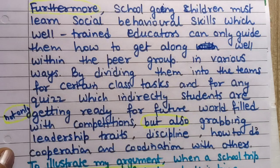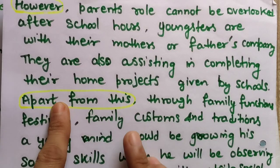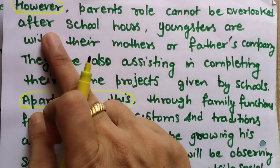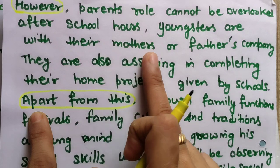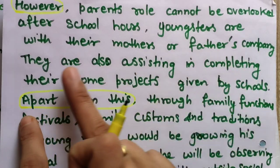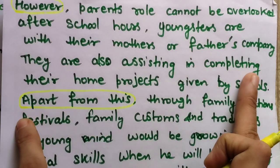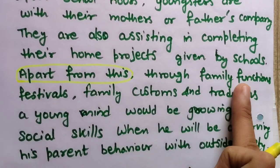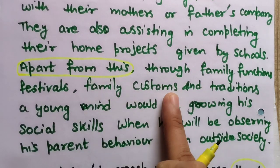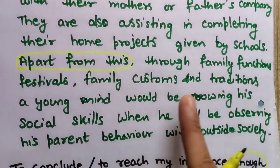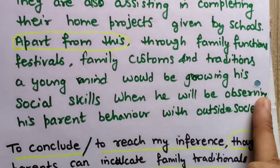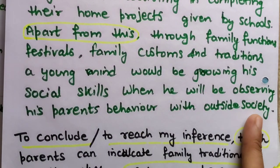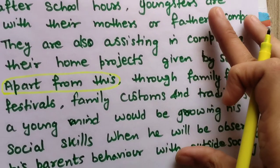For the third paragraph about parents: 'However, parents' role cannot be overlooked. After school hours, youngsters are in their mother's or father's company and parents assist in completing home projects given by schools. Apart from this, through family functions, festivals, family customs and traditions, a young mind grows his social skills by absorbing his parents' behavior with outside society.'